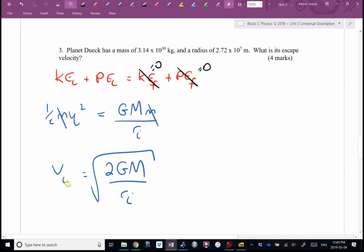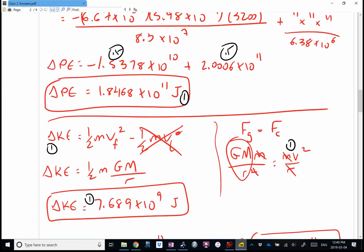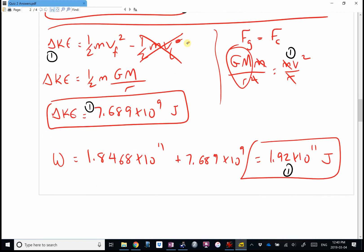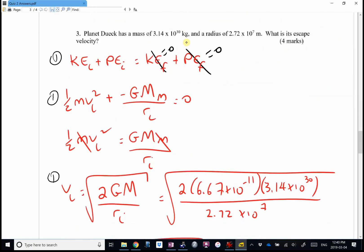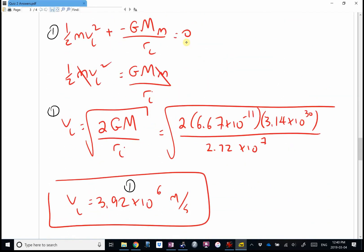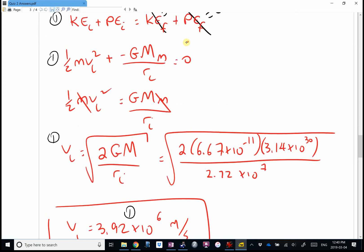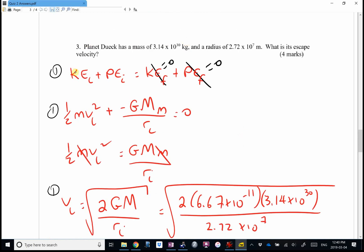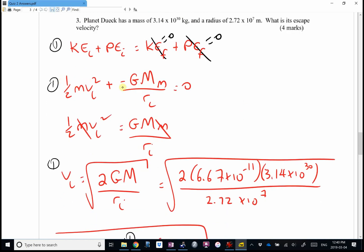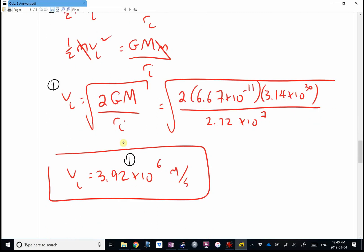It's really reversing the procedure. And when you carefully crunch the numbers for planet Duik, I can dream, I got 3.92 × 10^6. I would give you one mark if I saw the conservation of energy equation, one mark for that, one mark for that, one mark for the answer.